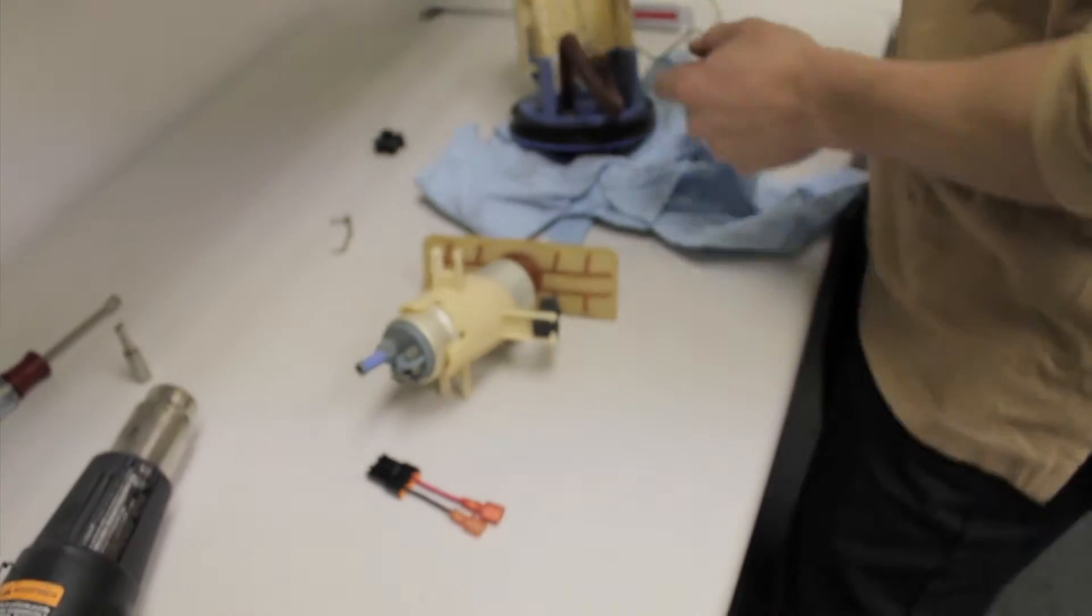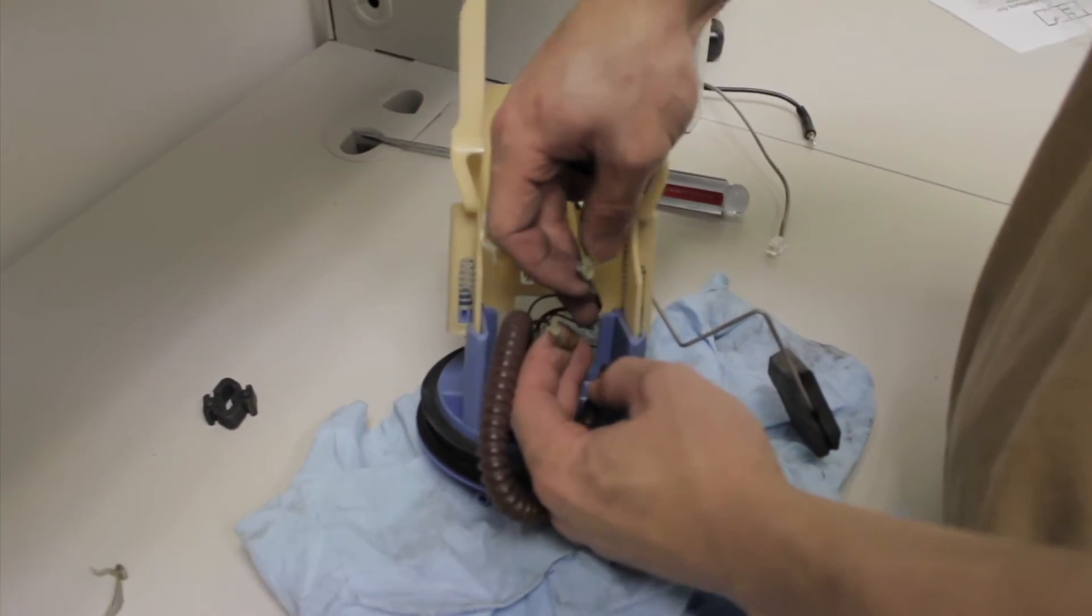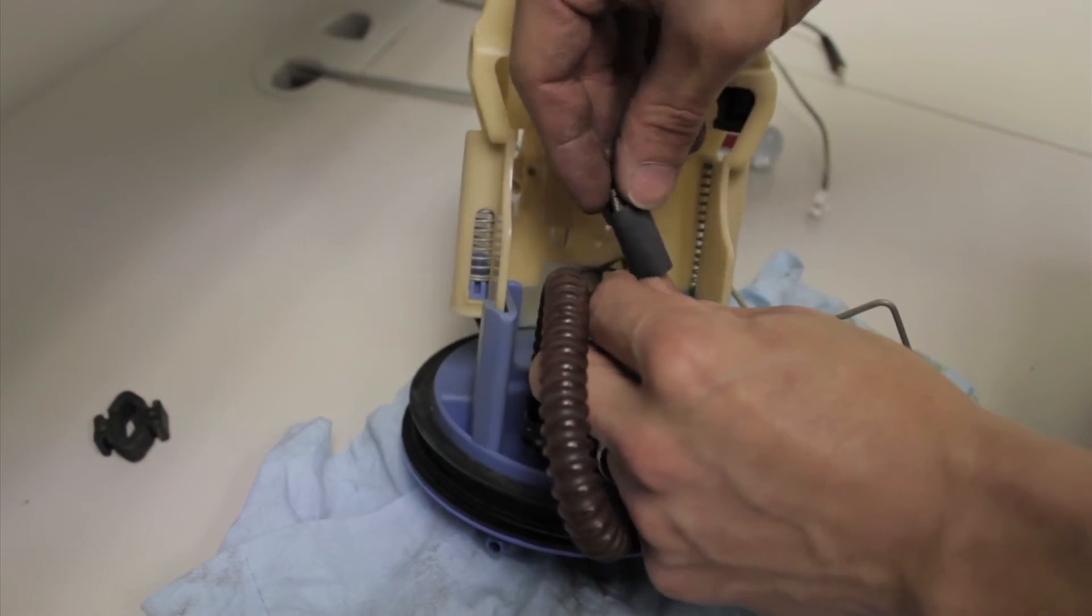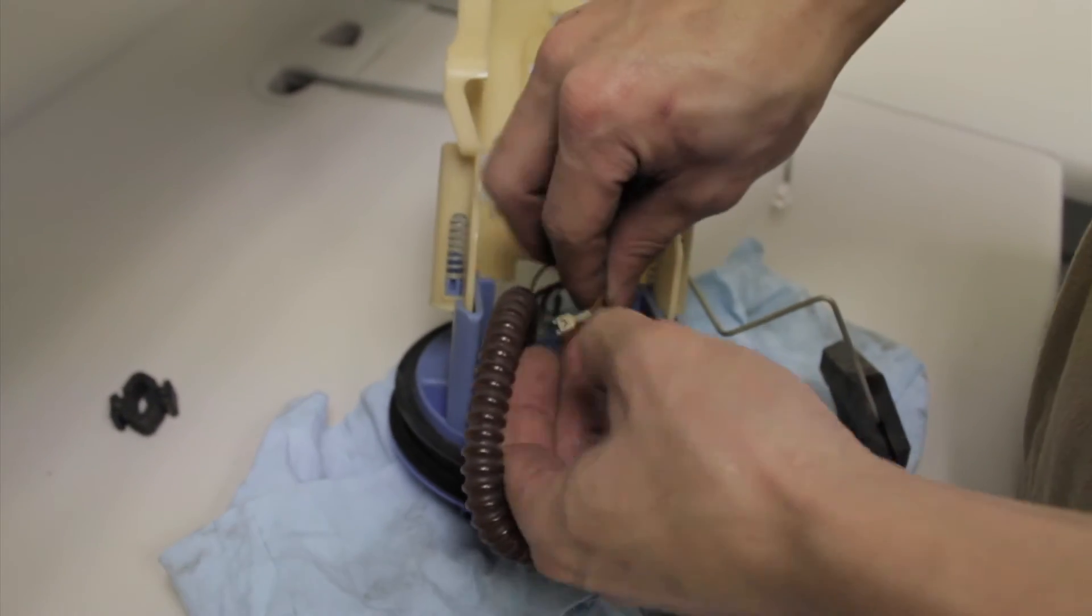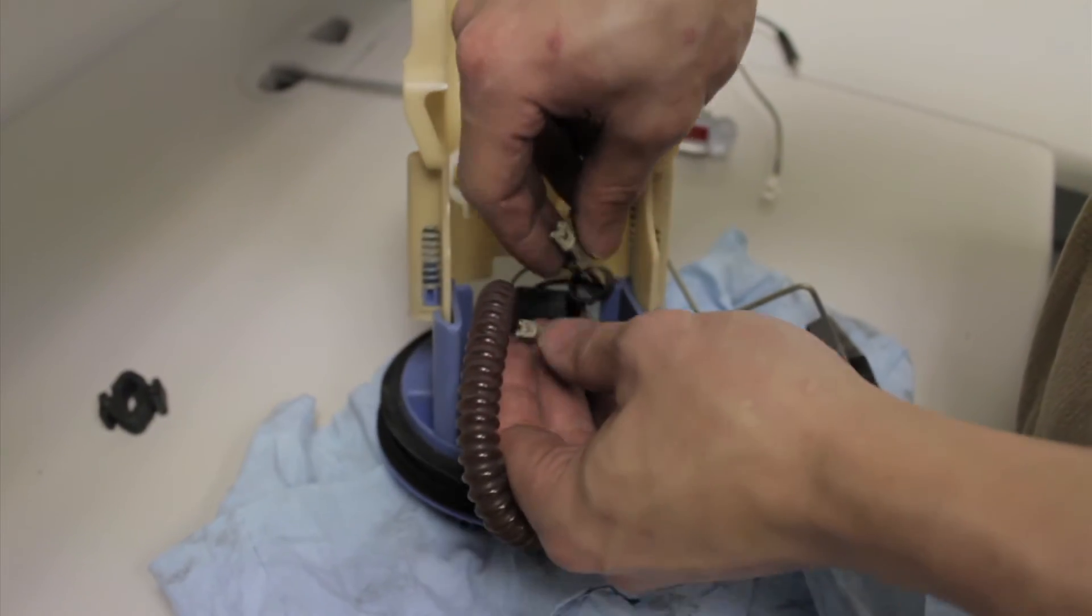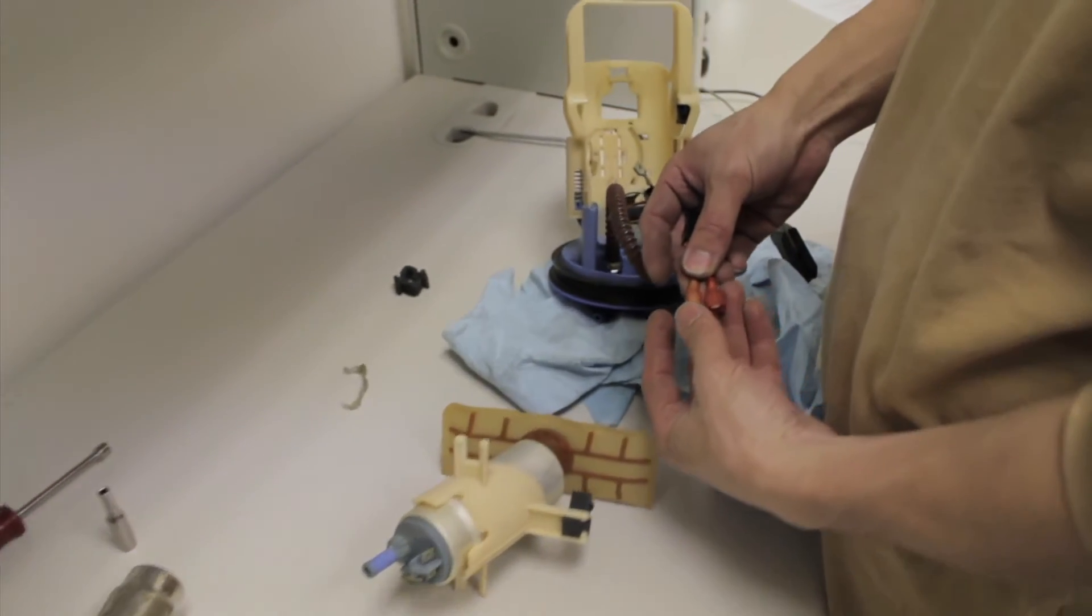These two pieces, what you're going to want to do is slide each one of them over each of the terminals for the fuel pump. So one over the big terminal, one over the smaller terminal. Now this harness here, the way it's made, there's a big terminal, there's a small terminal. It only goes on one way.